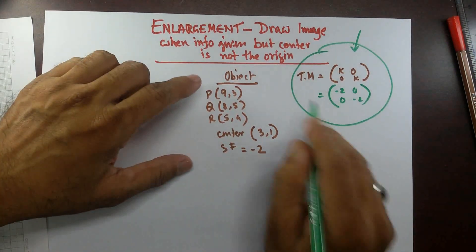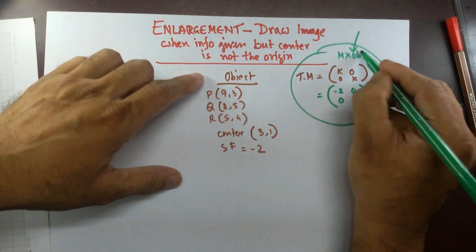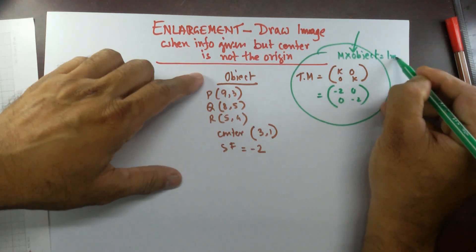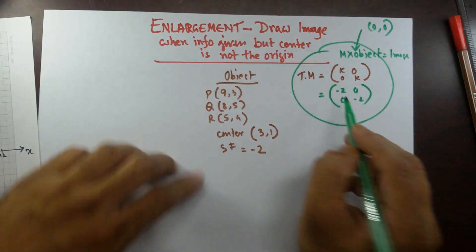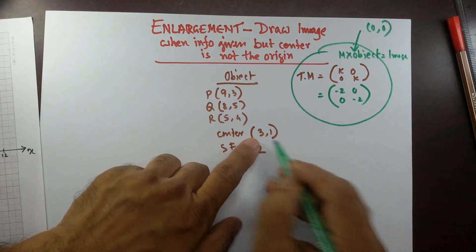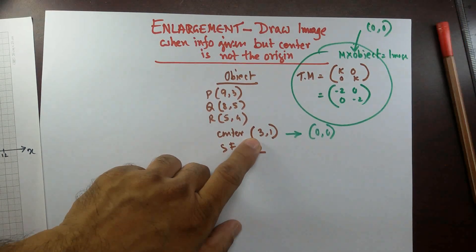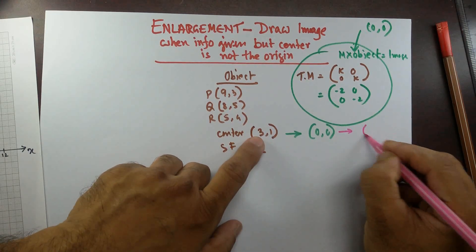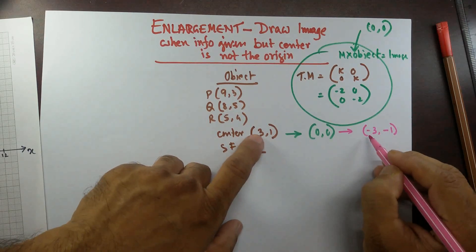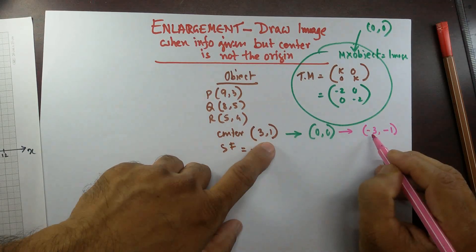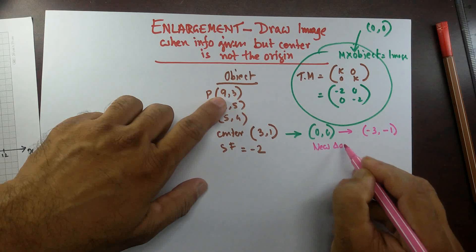The transformation matrix only works when the center is the origin. When the center is (0,0), we can just multiply the matrix by the object to get the image. In this case, to shift the center to the origin, I need to subtract 3 from the x-coordinates and subtract 1 from the y-coordinates of the object.